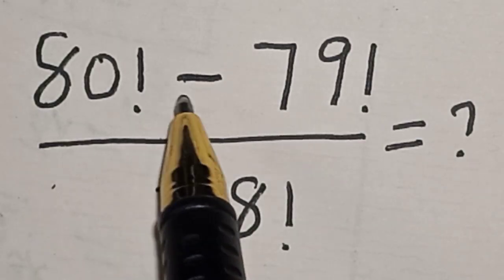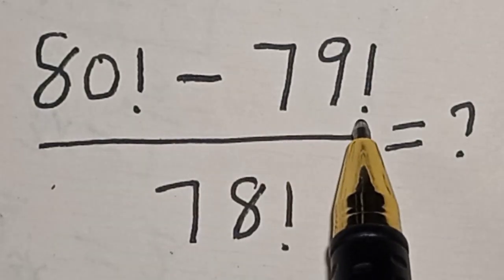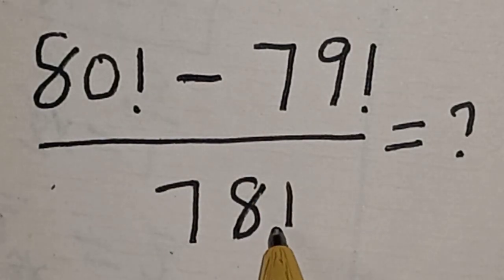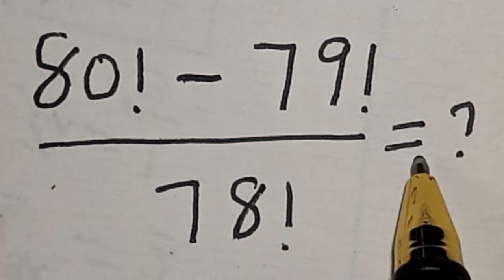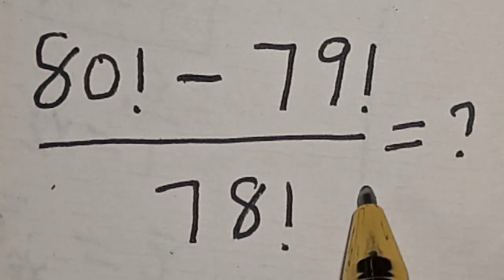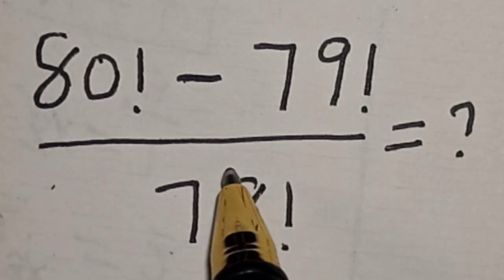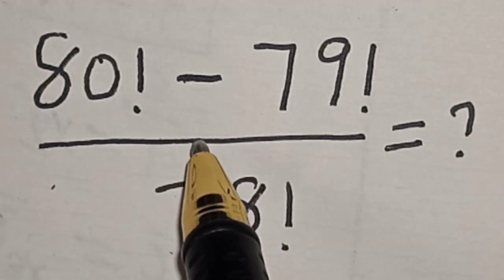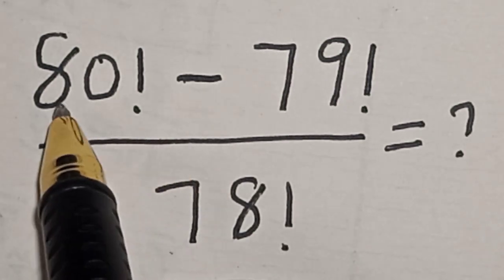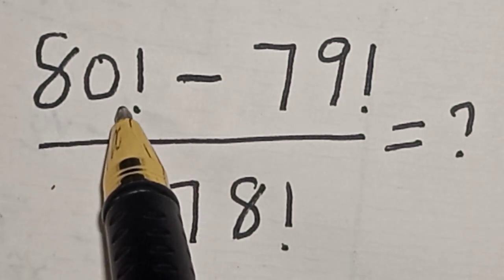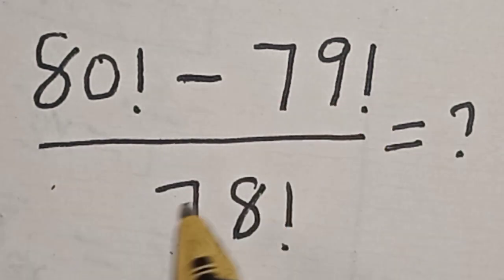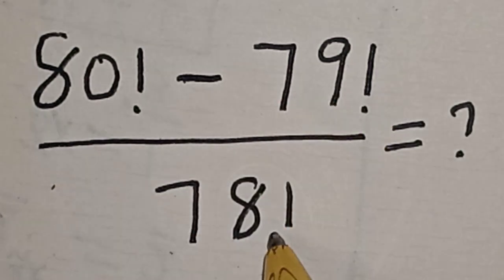80 factorial minus 79 factorial divided by 78 factorial is equal to what? Hi everyone, welcome to my class. In this class we quickly want to evaluate this math problem: 80 factorial minus 79 factorial divided by 78 factorial.